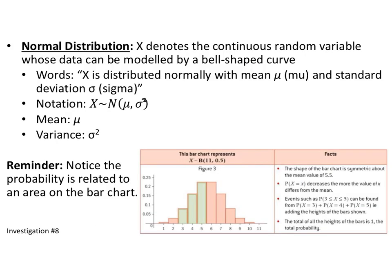Pause the video and write down these notes. X denotes the continuous random variable whose data can be modeled by a bell-shaped curve. We say that X is distributed normally with a mean mu and a standard deviation of sigma. The notation is X tilde N(mu, sigma squared), where mu is your mean and sigma squared is your variance. Whatever is being squared is your standard deviation.